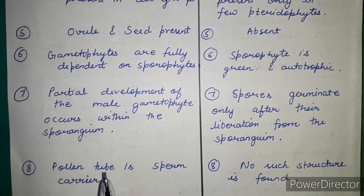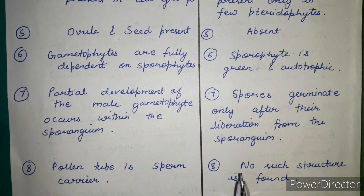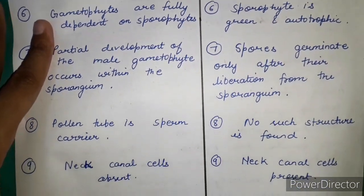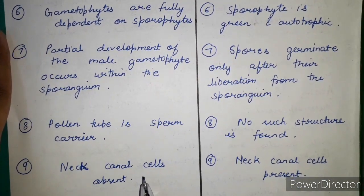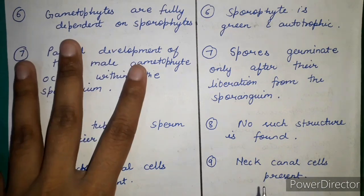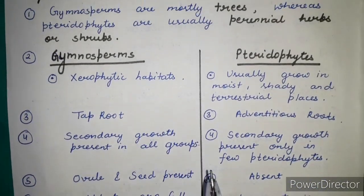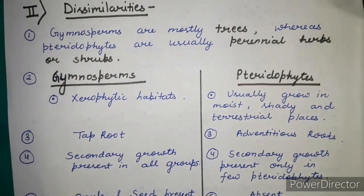The pollen tube in gymnosperms acts as a sperm carrier and is also haustorial; however, in pteridophytes, the pollen tube is completely absent. Next, neck canal cells are absent in gymnosperms, whereas in pteridophytes, neck canal cells are present. These are the dissimilarities between gymnosperms and pteridophytes.